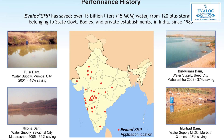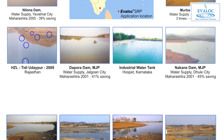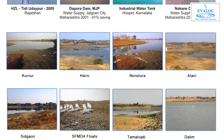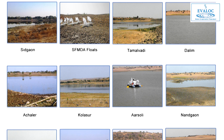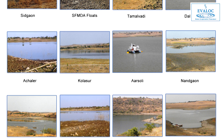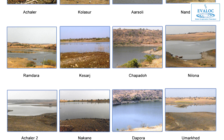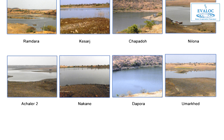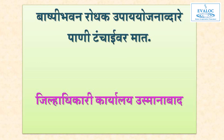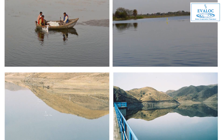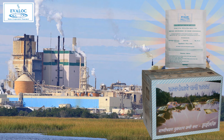EVALOC has been used on many large water bodies repeatedly since 1983. A few examples include Government of Maharashtra sites: Dheku, Ambadi, Bindusara, MJP Mathiran, Alibag, Nakane, Dapora, Dahegav, Yavatmal, Nilona, Chapdo, Umarkhed, Veer, MIDC Murbad, Ransai, Uran, Tulsi, Mumbai Corporation, the Rajasthan Government — PHED Bisalpur, Osmanabad, 18 dams — and Hindustan Zinc Limited and PHED Chittod.